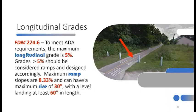For shared use paths not adjacent to or parallel with a roadway, ramp criteria applies. There is no issue up to 5% grade, but between 5% and 8.33% is considered a ramp. Ramp criteria includes handrails, a maximum rise of 30 inches between level landings, and level landings that are as wide as the facility and at least 60 inches in length.